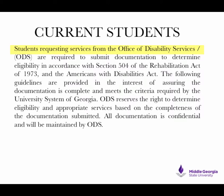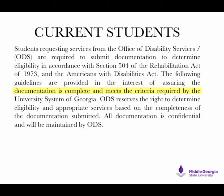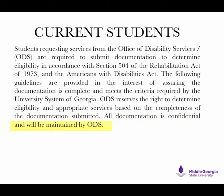Students requesting services from the Office of Disability Services, or ODS, are required to submit documentation to determine eligibility in accordance with Section 504 of the Rehabilitation Act of 1973 and the Americans with Disabilities Act. The following guidelines are provided to assure the documentation is complete and meets the criteria required by the University System of Georgia. ODS reserves the right to determine eligibility and appropriate services based on the completeness of the documentation submitted. All documentation is confidential and will be maintained by ODS.